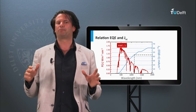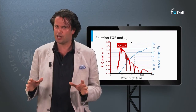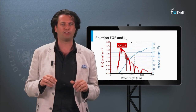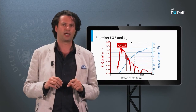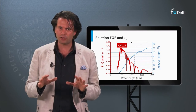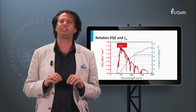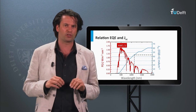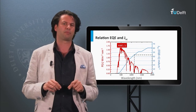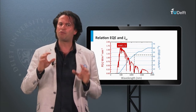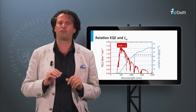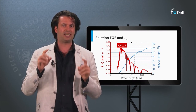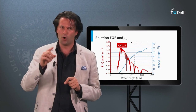In summary, we have discussed how to determine the spectral utilization of a single junction solar cell. The band gap of the semiconductor material determines the theoretical maximum current density and open circuit voltage that can be obtained. In the next block, we will discuss the optimum performance of single junction solar cells under standard test conditions in more detail.